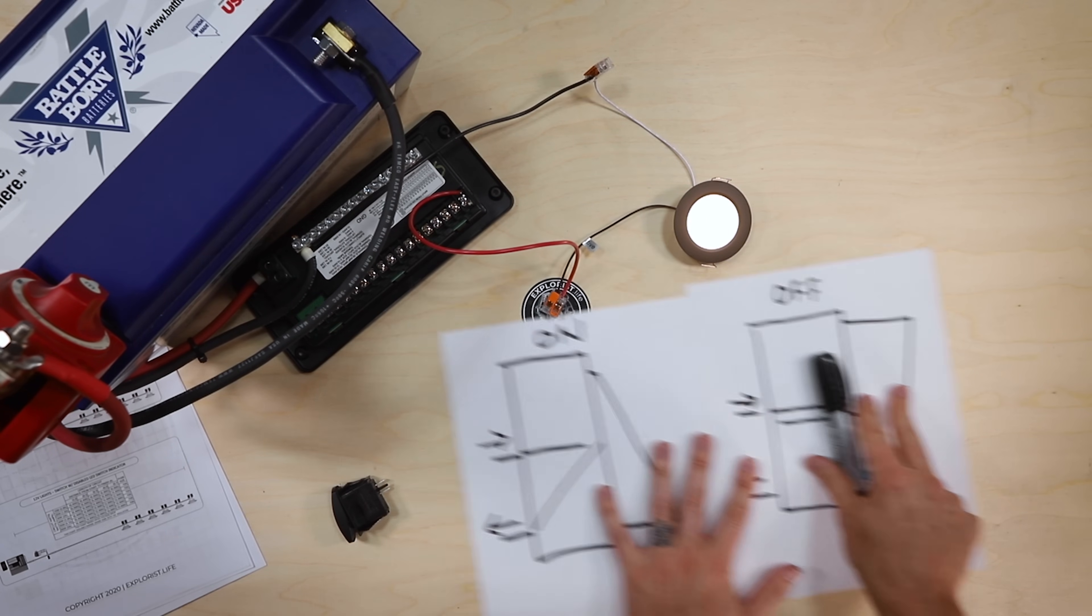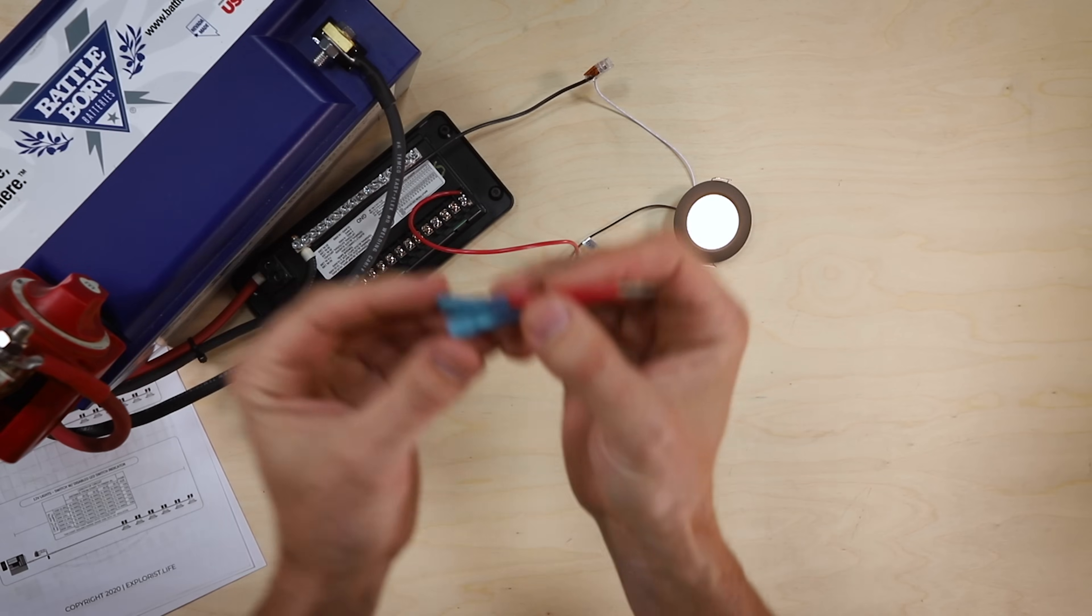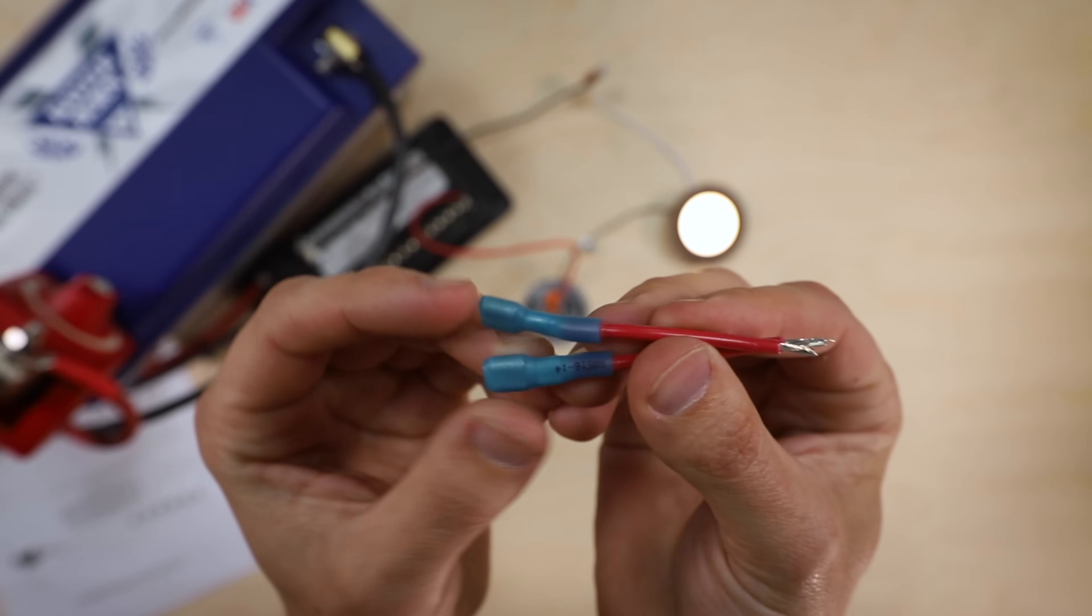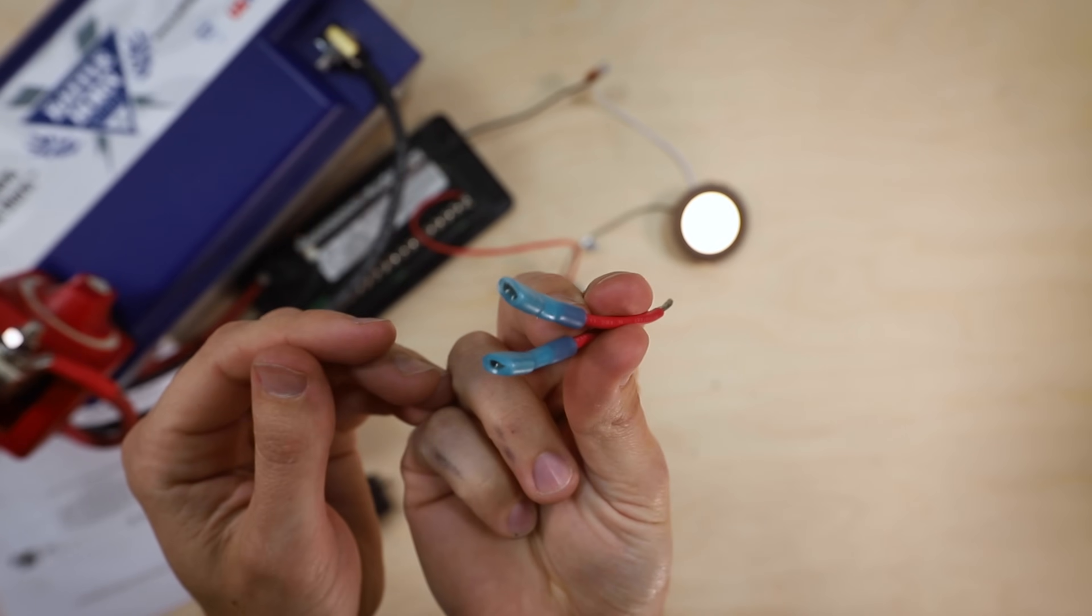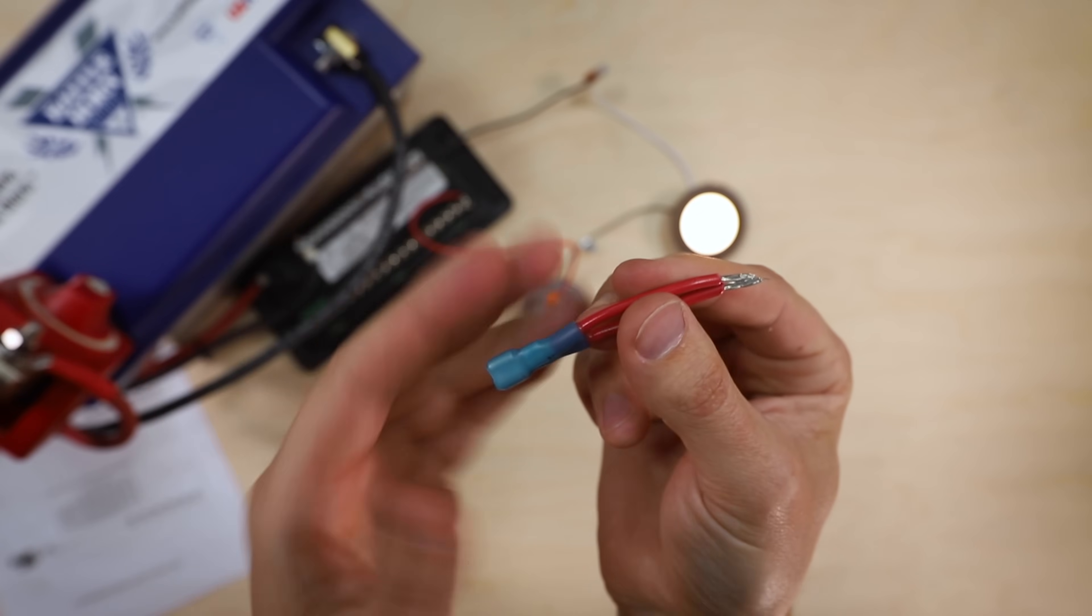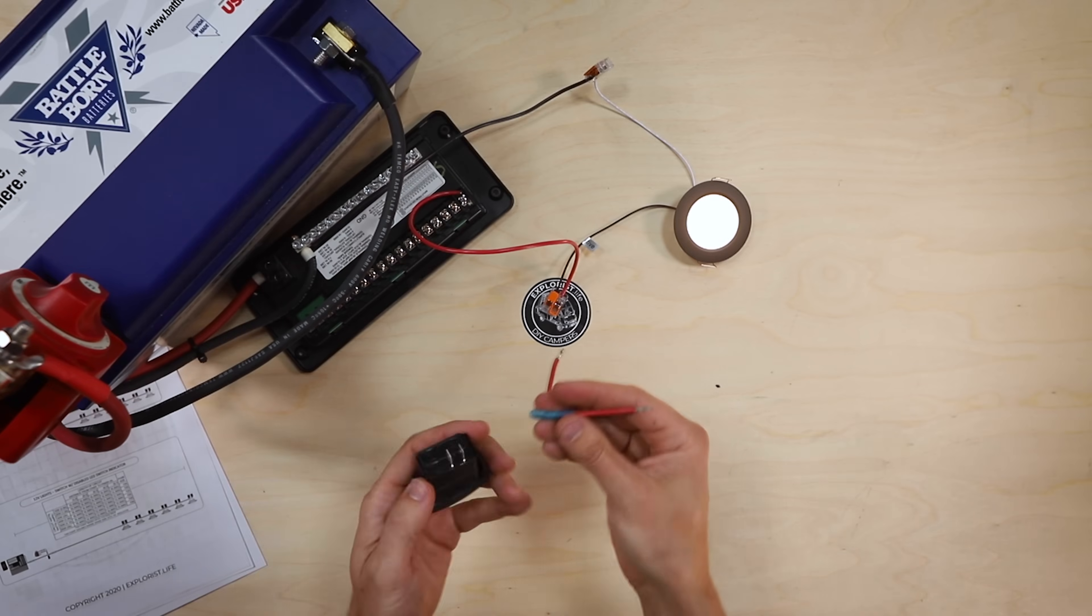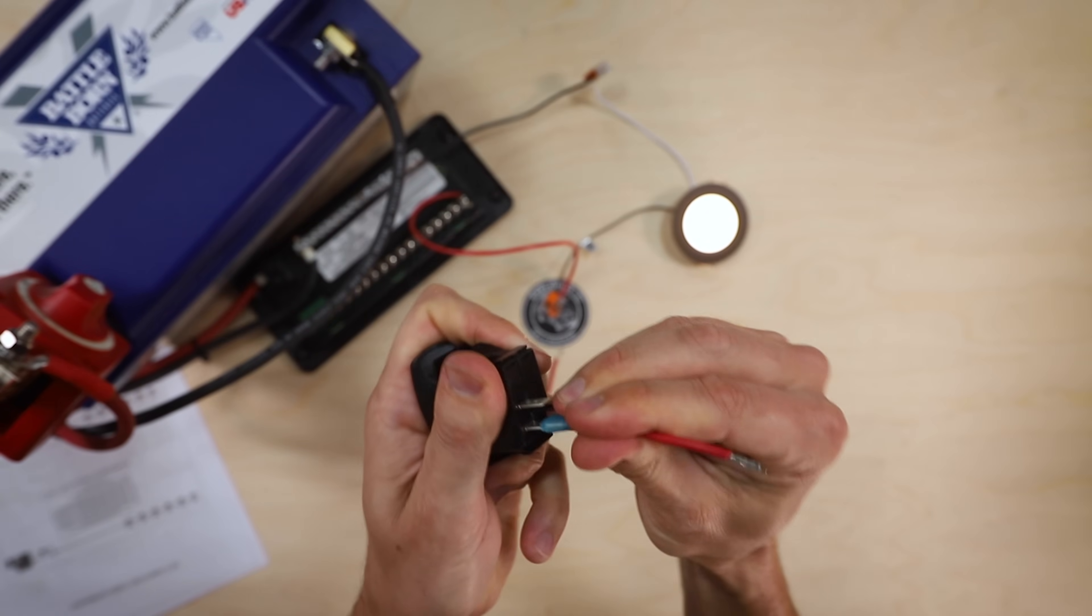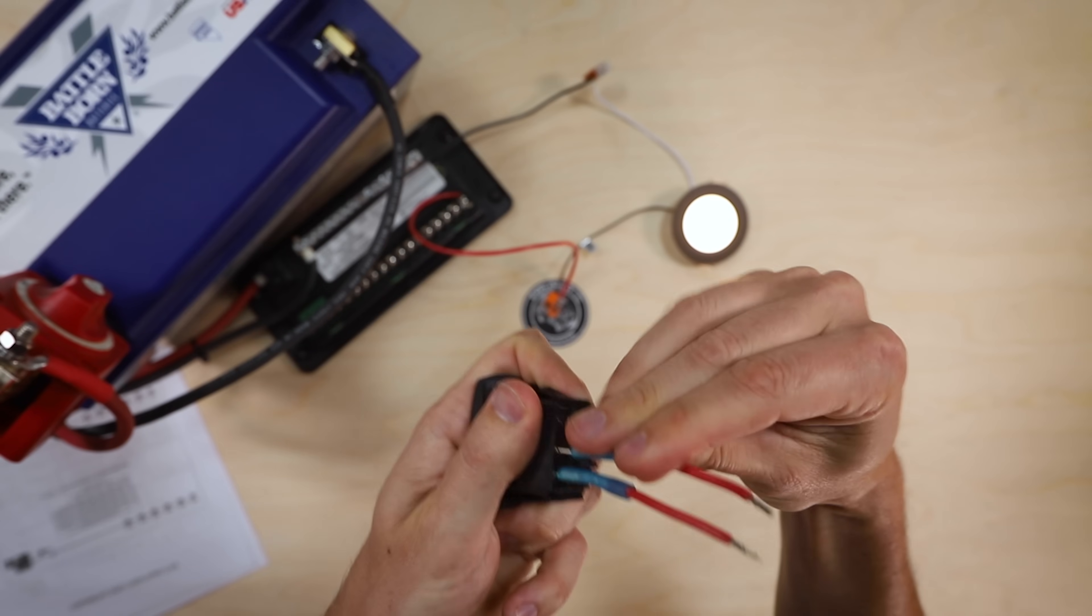And now here's how we're going to wire the switch. I've made two little jumpers with stripped ends on one side and spade connectors on the other side. I went ahead and pre-made those for the sake of time. If you don't know how to make these, just check out the last two videos that we made. We made these a few dozen times. So check those out if you don't know how to make those. Those just go on the back side of the switch like so.